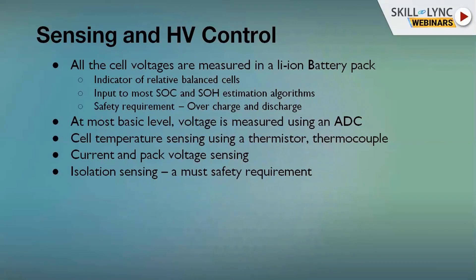Individual cell temperatures or collective temperature — or it may be a hot spot in the battery pack — will be sensed by the BMS. The third sensing element is current and pack voltage sensing, where the current drawn by the load and the pack voltage are measured. This information is used for calculating the battery parameters.